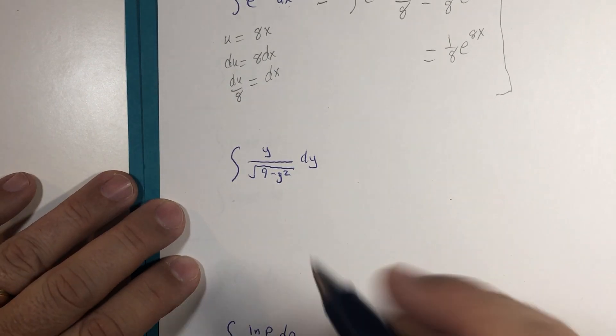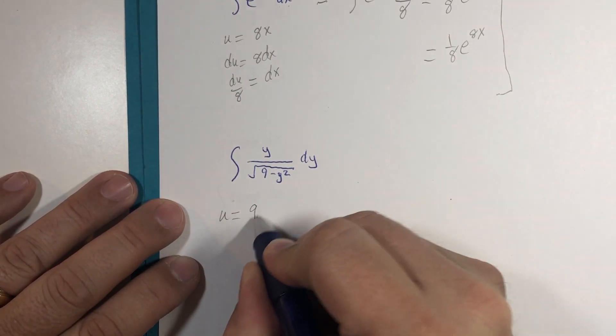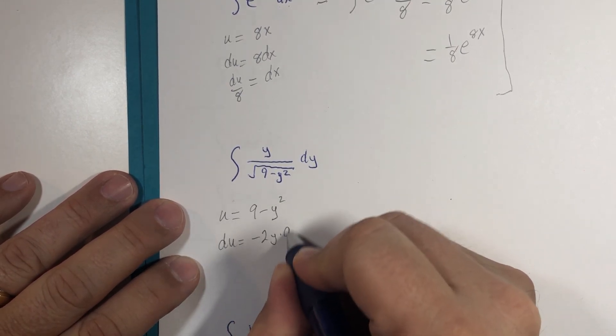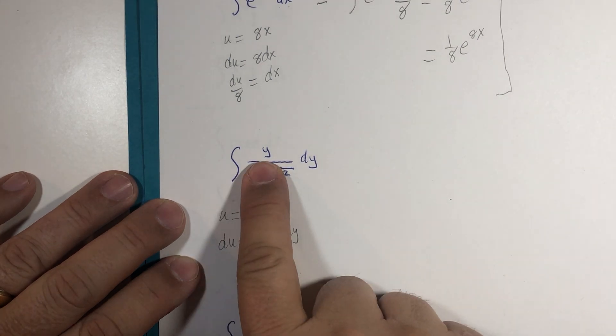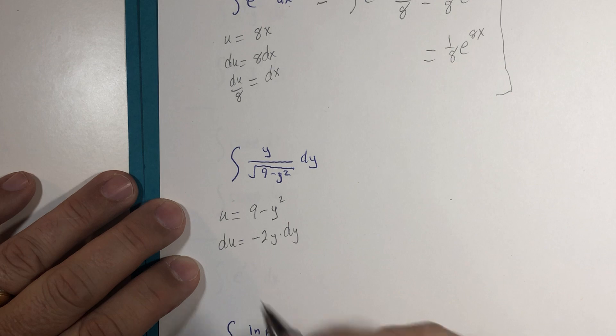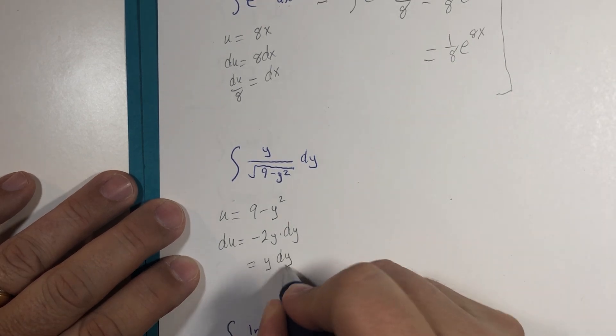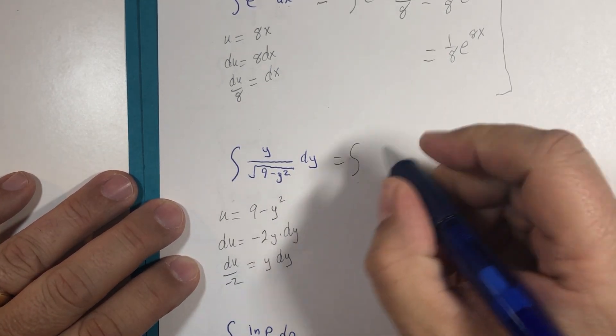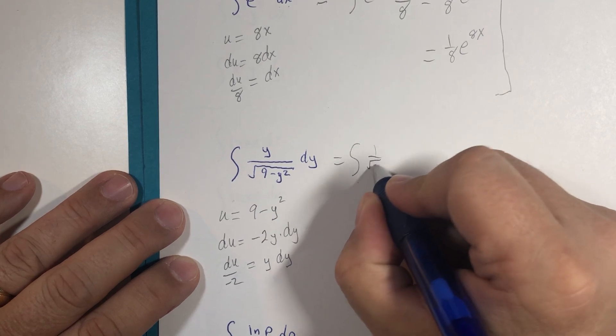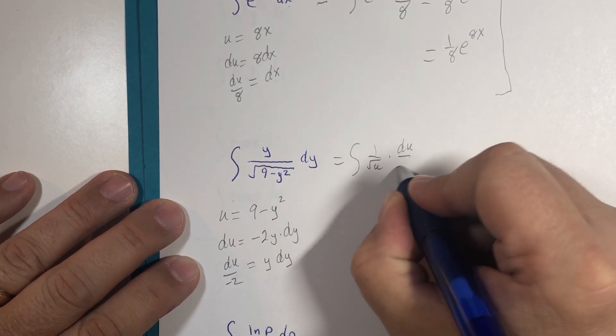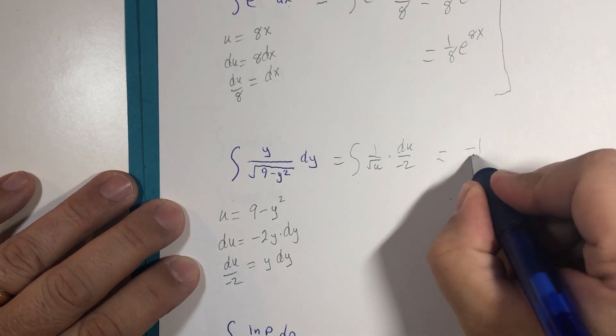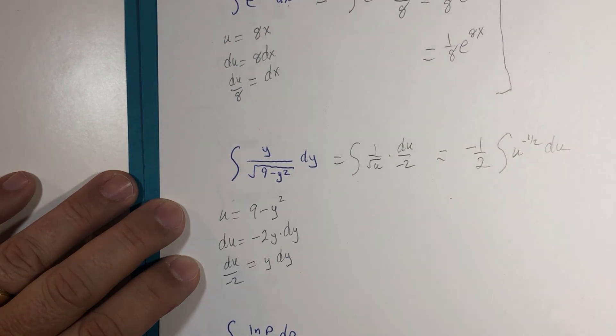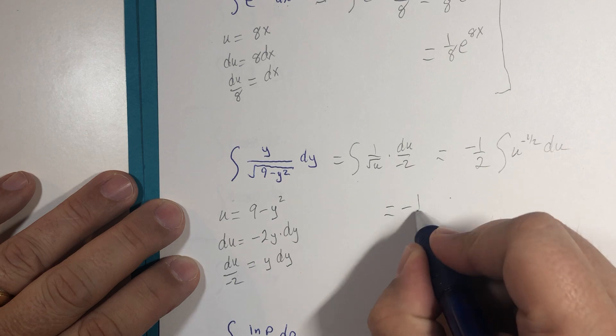What should we use for this one? If u is 9 minus y squared, then du is negative 2y dy. That's the differential. I have a y and I have a dy but I don't have a negative 2, so what I do have is equal to du divided by negative 2. And once I finish writing my substitution, u over negative 2, I'm going to do one additional rewrite: u to the negative half power, and our power rule takes over again.